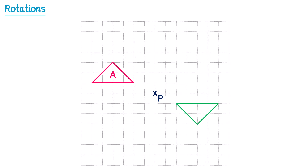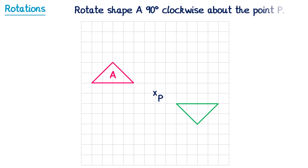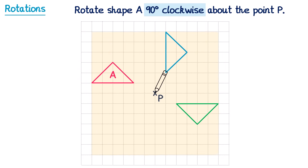What if the question had said to rotate this shape 90 degrees clockwise? We do exactly the same thing — we trace around the shape, then take a pencil and place it on the point we're rotating around, but we're going to go 90 degrees clockwise this time, so one quarter of a turn in the direction that the hands on a clock move. With the pencil firmly pressed down, we take the tracing paper and turn it one quarter of a turn in that direction. The final shape will end up here, so we remove the tracing paper and draw the shape there.